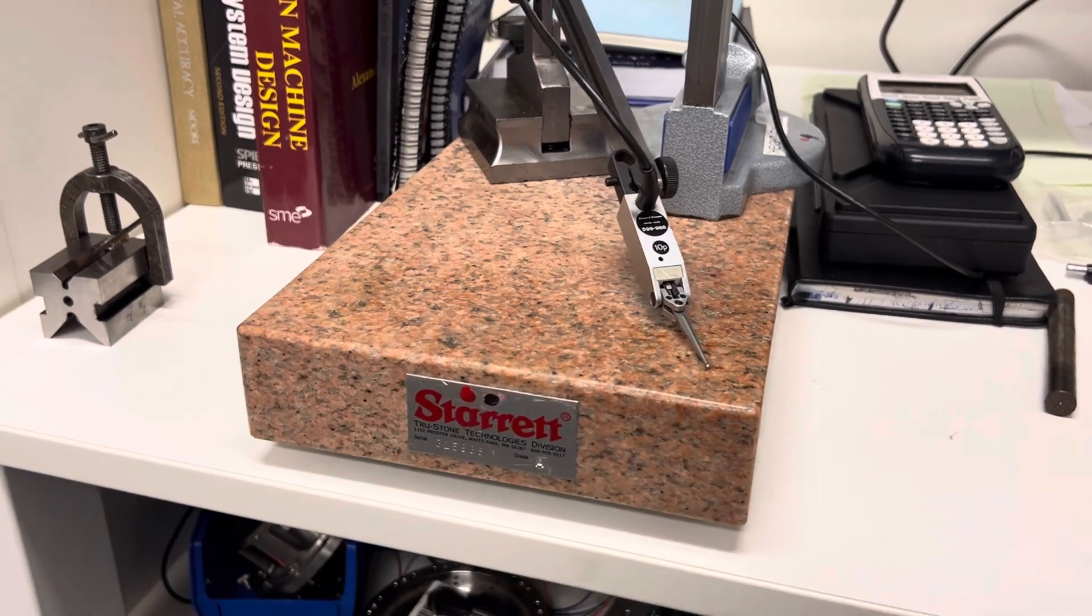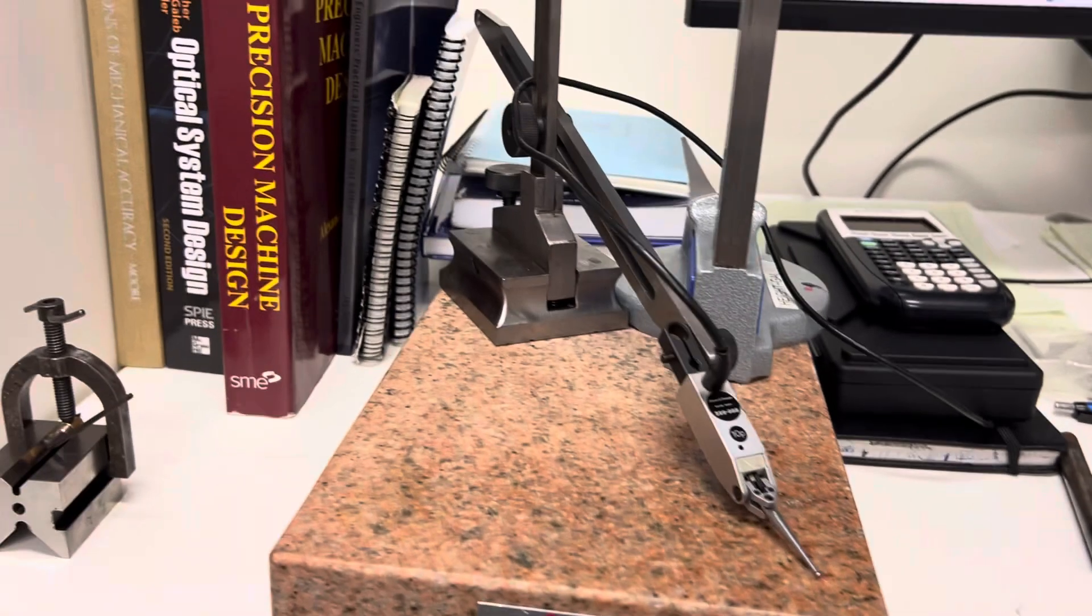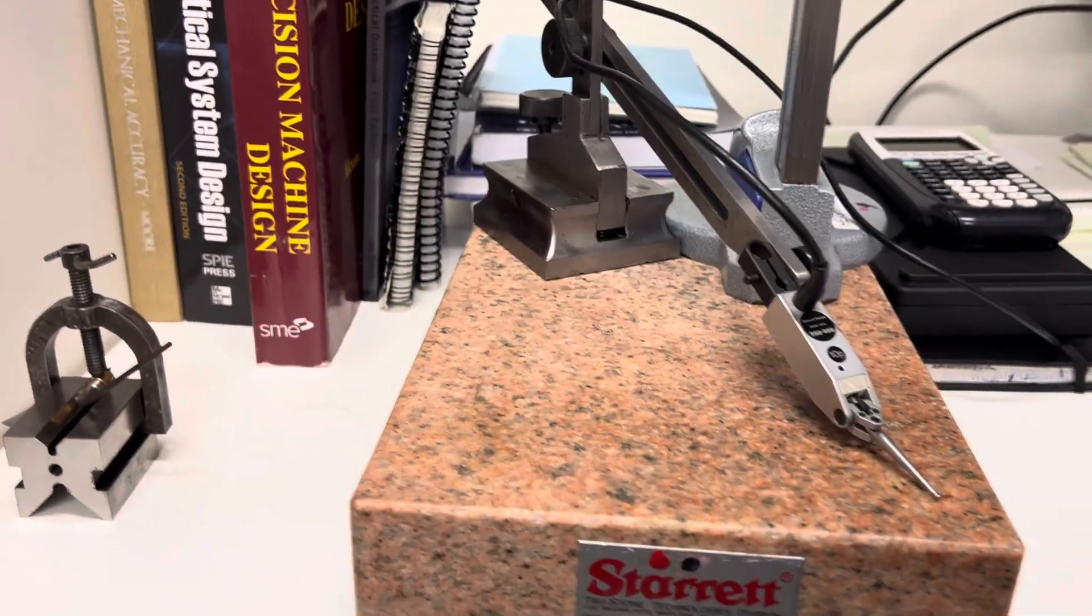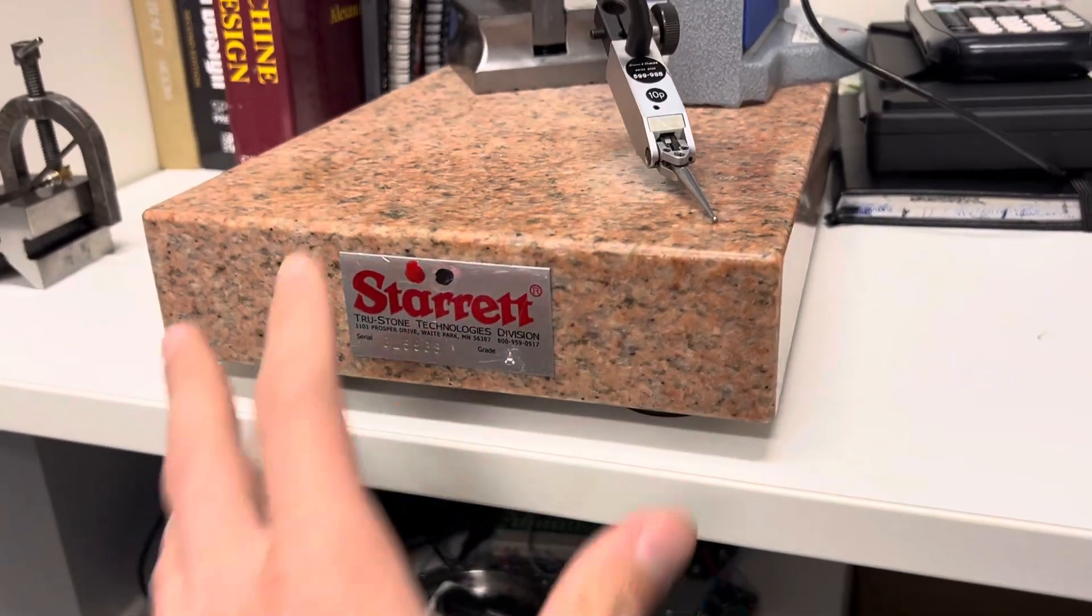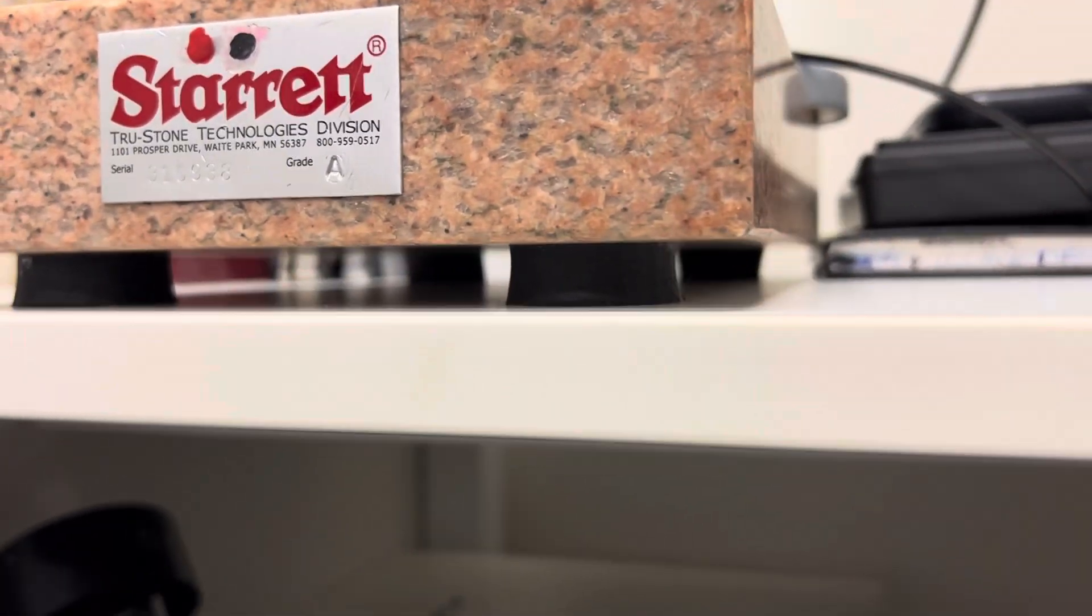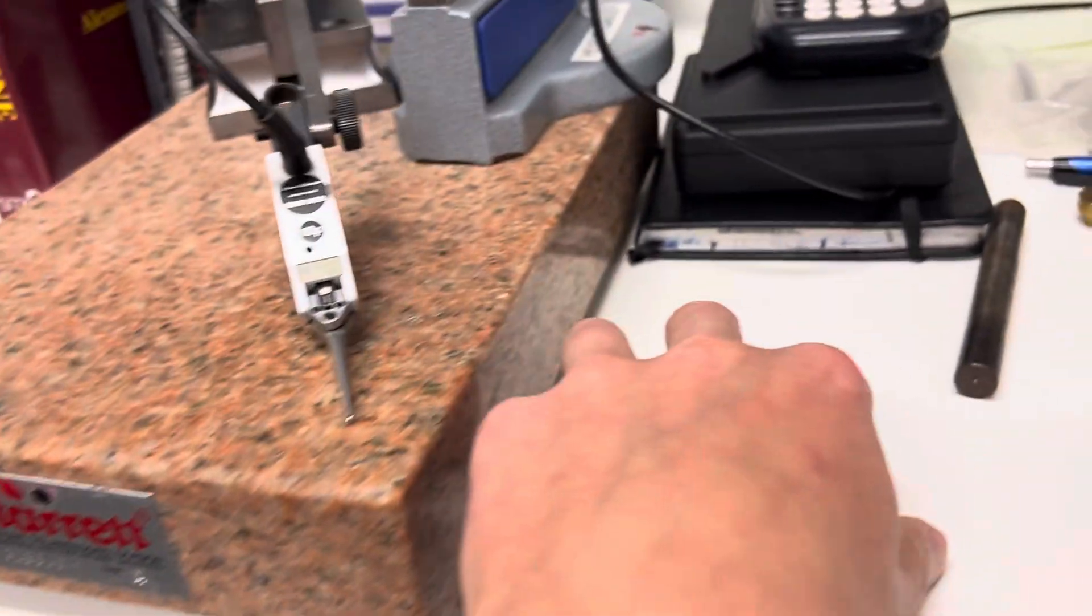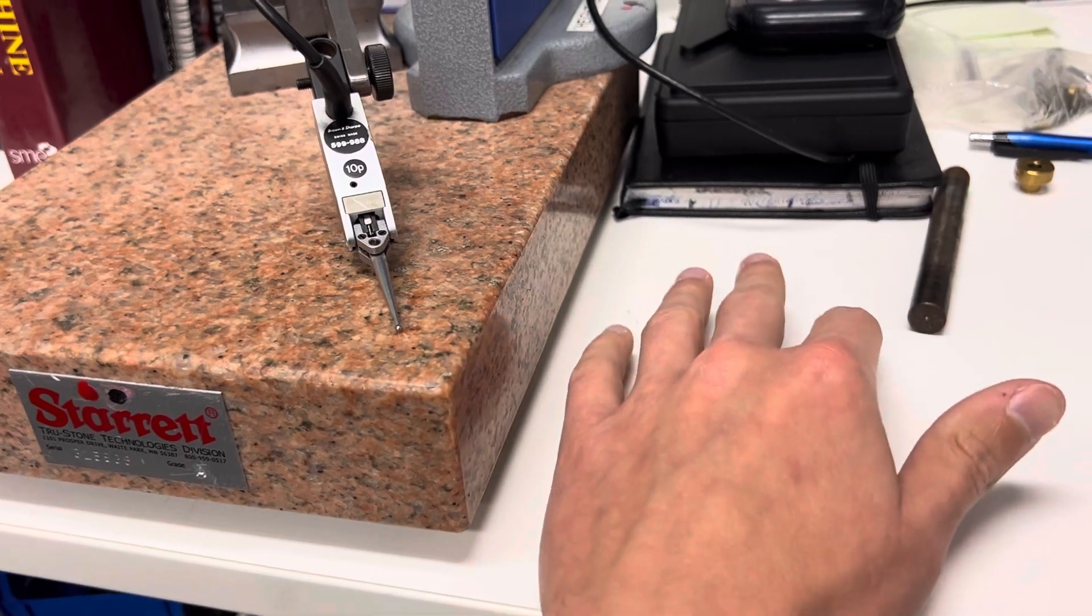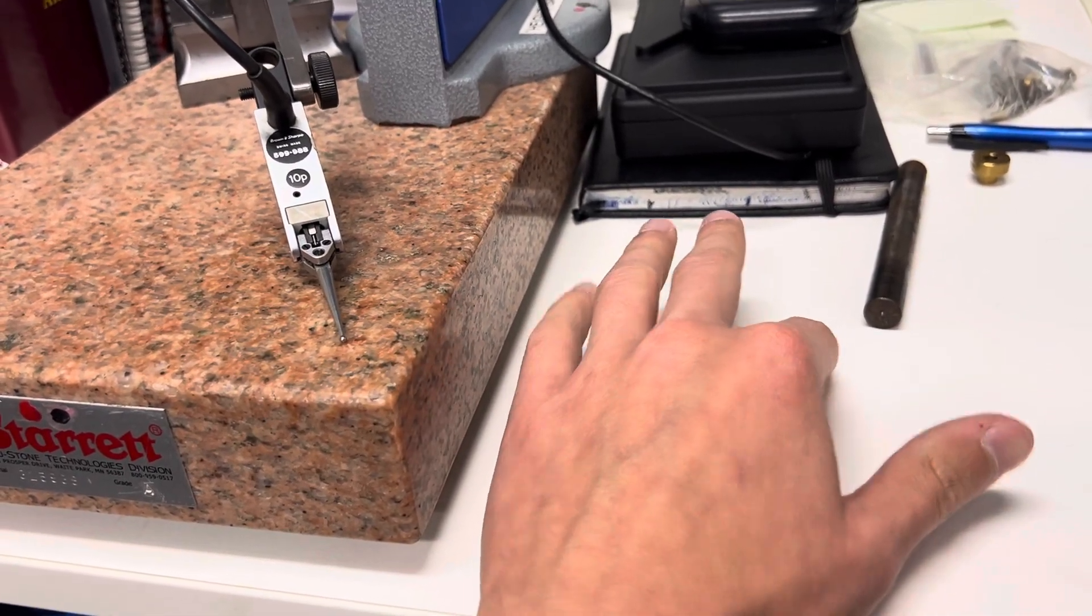So here on the desk I've got this little surface plate on which I have an indicator set up, just going from one side to the other, and it's supported on four rubber feet. Now what we're always taught is, a three-legged stool doesn't rock, a four-legged table is going to be statically indeterminate, and there's multiple positions in which it can exist.